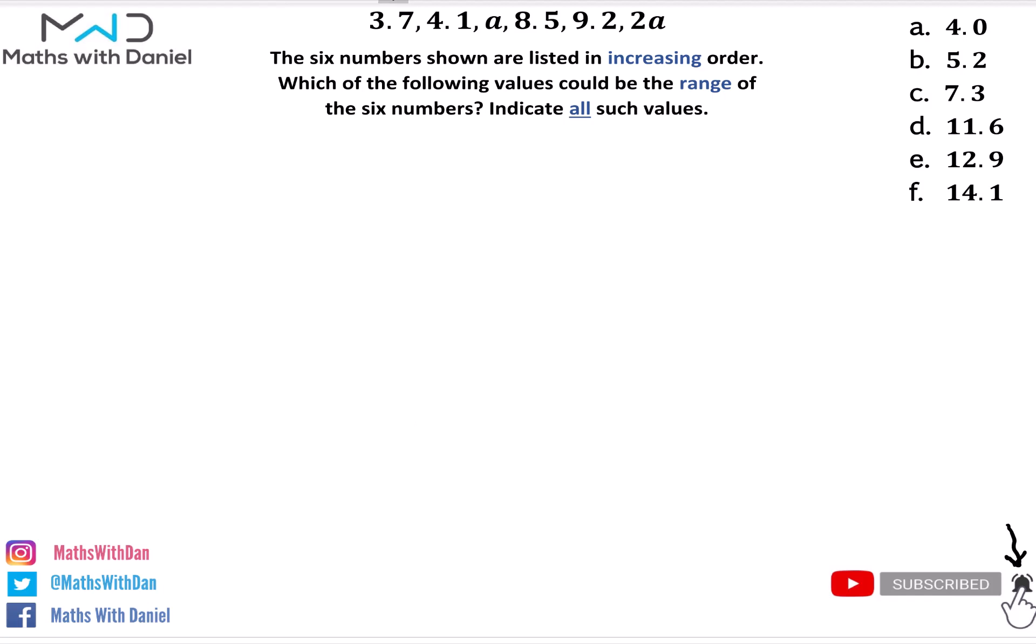Okay, before you do anything, the first thing I would do is say to yourself, well what is the range? The range of a set of numbers is the largest number take away the smallest. We can clearly see that the largest number is 2a, whatever a is, and the smallest number is 3.7. So what I'm going to do is write an equation for the range. We know that the range is going to be equal to 2a minus 3.7. So you can clearly see that from this equation the range is dependent on the variable a.